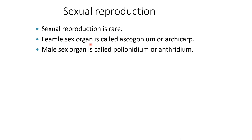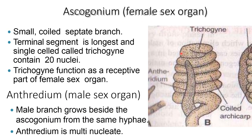Sexual reproduction is rare. The female sex organ is called the ascogonium or archicarp, and the male sex organ is called the pollinodium or antheridium. The ascogonium is a small, coiled, septate branch; the terminal segment is the longest and single-celled, called the trichogyne. It contains 20 nuclei, and the trichogyne functions as the receptive part of the female sex organ. The antheridium, which is the male sex organ, grows beside the ascogonium from the same hyphae. The antheridium is multi-nucleated.